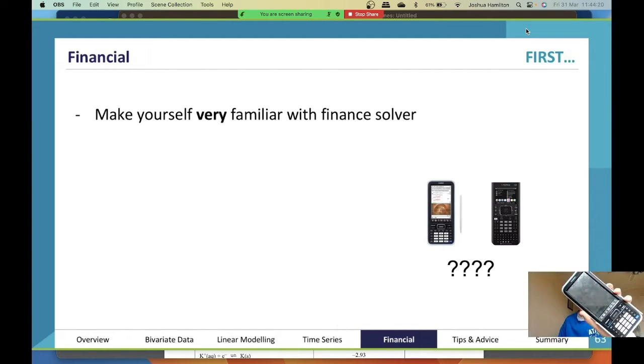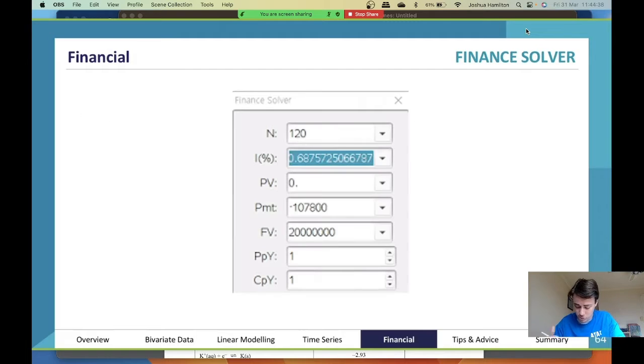You click on it and it comes up. There's a finance section in your menu, on the second page unless these have changed. Really important you know where that is. Your financial solver should look something like this: you'll have n, your interest rate, your previous value, your payments, your future value, and then your PPY, CPY which are a bit useless because we don't ever really work with them.